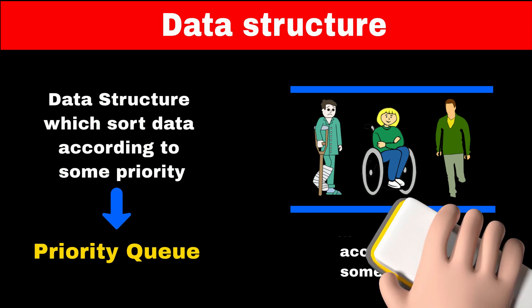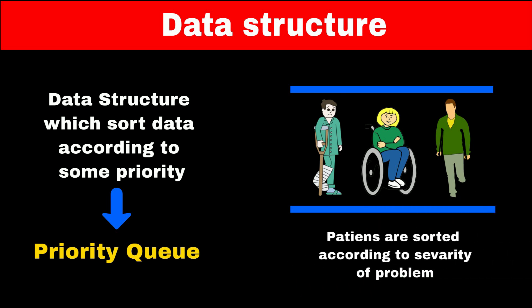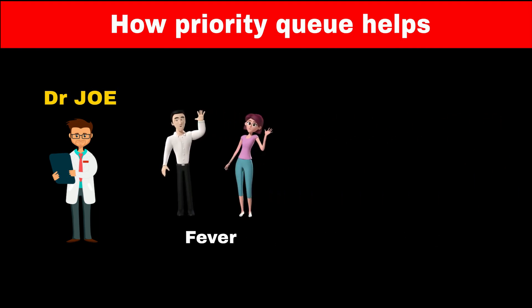So in our case, each patient has a priority assigned to it, which is the severity of the disease. Whenever patients come to the hospital, we will add them into the queue. Now we have only one doctor available at the hospital, named Joy. So the doctor can treat only one patient at a time. Consider Ross and Rachel have a fever, so they come to the hospital for a visit.